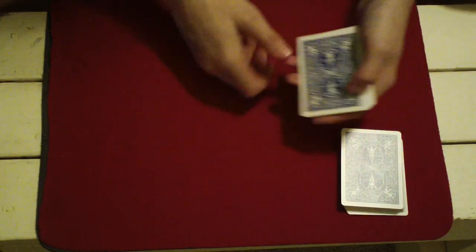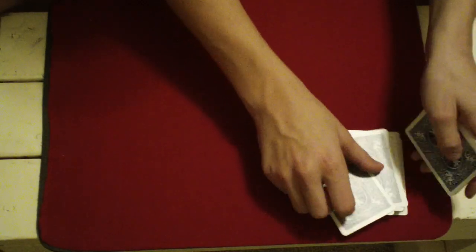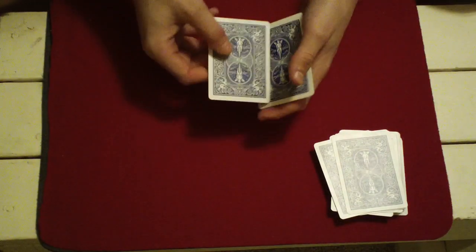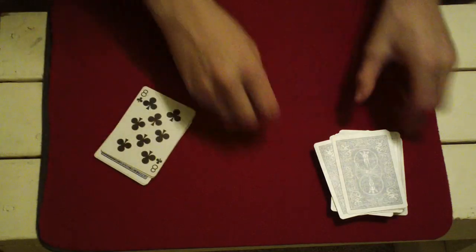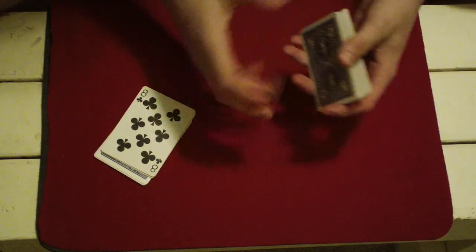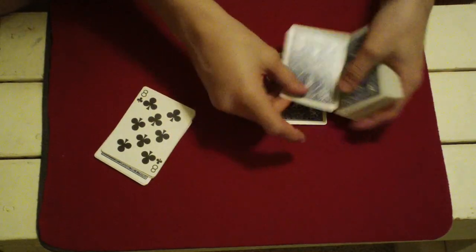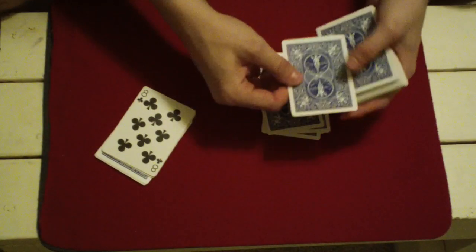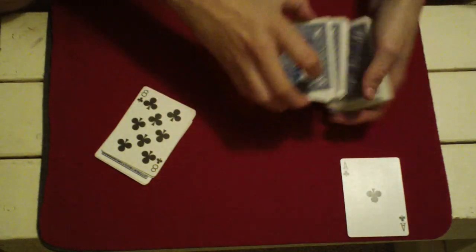So let's deal 6 cards back. [Counts 1 through 6] We'll take the card we land on, in this case the 8 of clubs. Now if we deal 8 cards down in this pile we should come to the first ace. So let's see. [Counts 1 through 8] And the 8th card is the first ace.